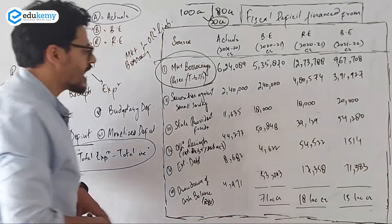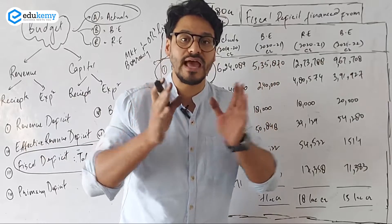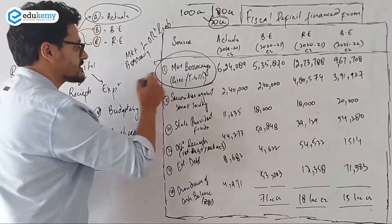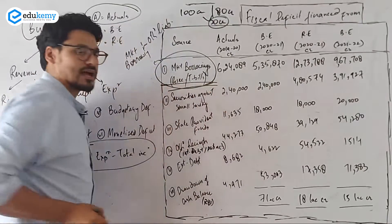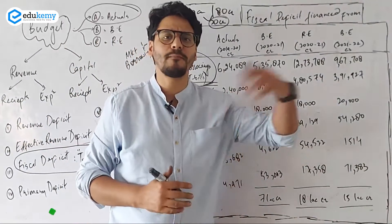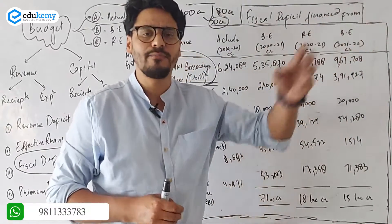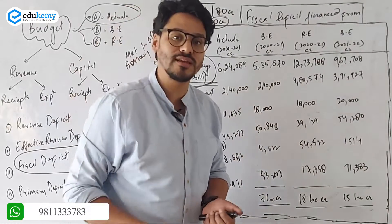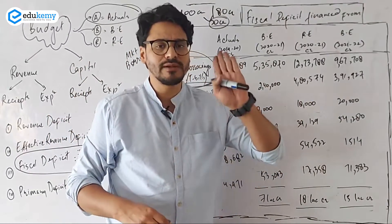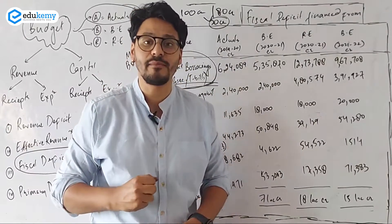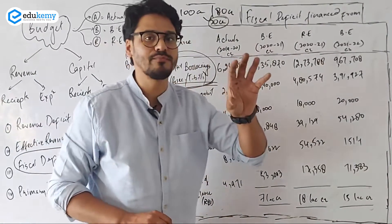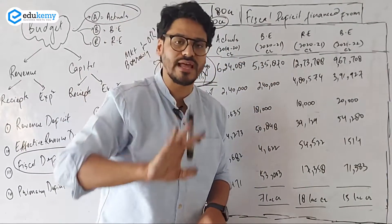Now from where is this borrowing financed? The most important source from which the government borrows the most is from the market — that is called market borrowing. The government does market borrowing by issuing bonds and bills. Bonds are for 5 years, 10 years — long term; the benchmark bond is for 10 years. Bills are for less than one year — it can be for 91 days, 182 days, or 364 days. The government issues bills and bonds — government securities and treasury bills — and takes money from the market. This is the most important source for financing fiscal deficit.